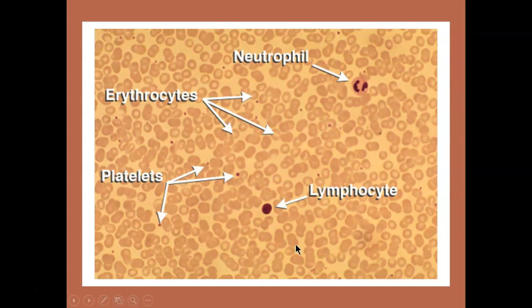Here you have a neutrophil and a lymphocyte — two types of white blood cells — and you can see they appear very differently. All the little purple spots that look like sprinkled pepper are your thrombocytes, or platelets. Platelets are responsible for blood coagulation and stopping bleeding, a process known as hemostasis — not homeostasis — where 'hemo' means blood.